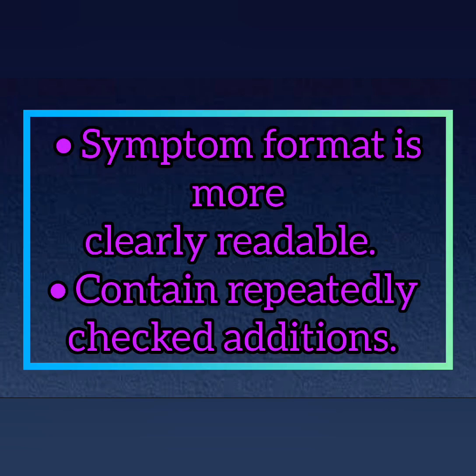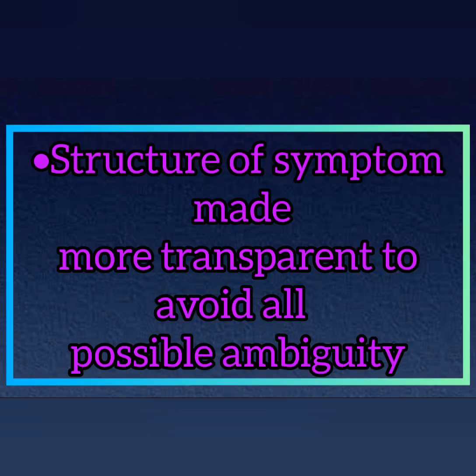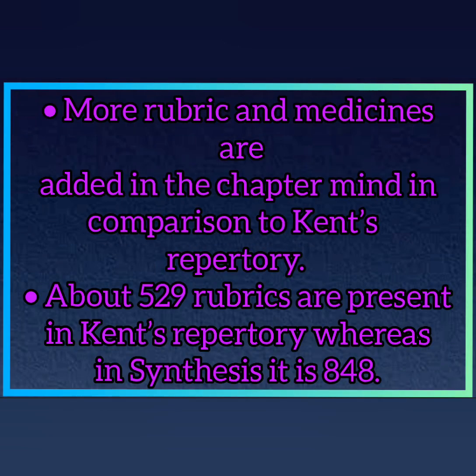The symptom format is more clearly readable and contains repeatedly checked editions. The structure of symptoms has been made more transparent to avoid all possible ambiguity. More rubrics and medicines have been added in the chapter of Mind in comparison to Kent's Repertory — about 529 rubrics are present in Kent, whereas in Synthesis it is 848.